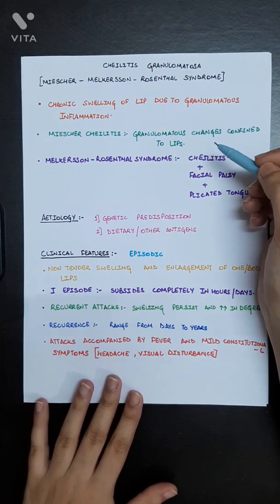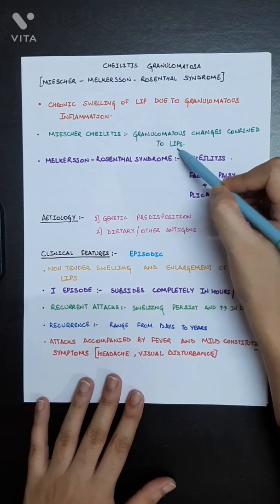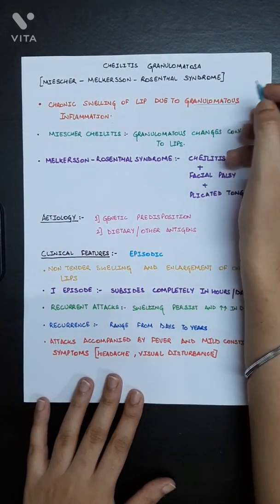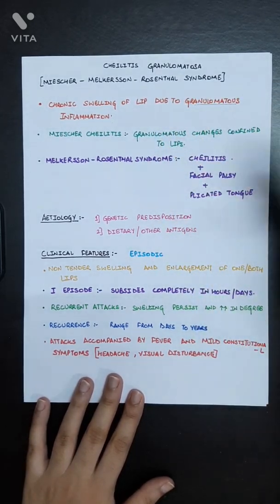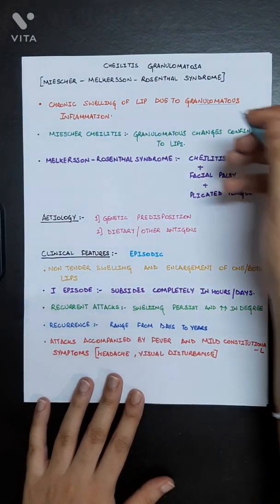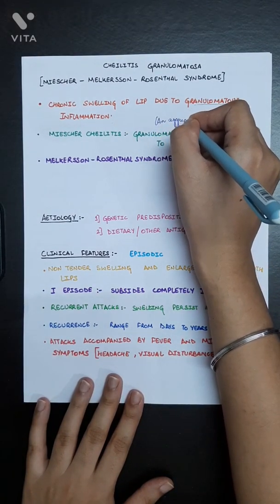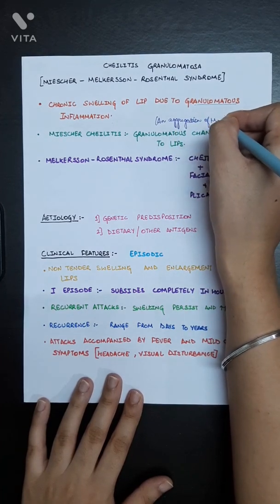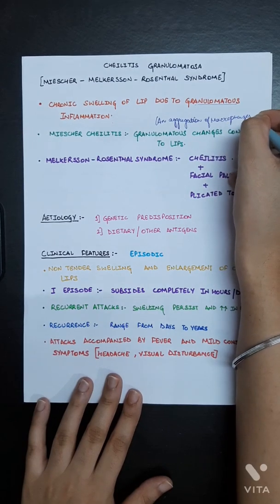Micheli cheilitis means granulomatous changes confined to lips. Now what is granulomatous or what is granuloma basically? A granuloma is an aggregation of macrophages which are formed in response to an inflammation.